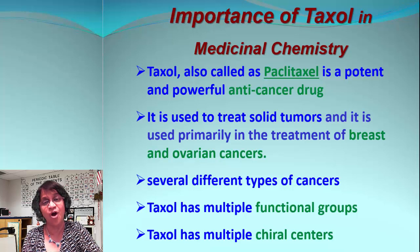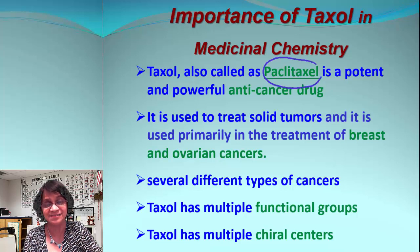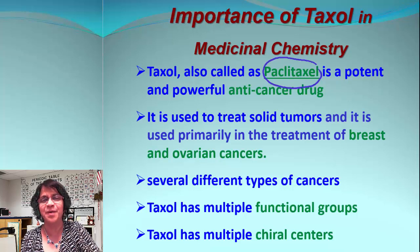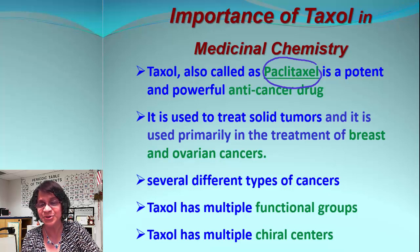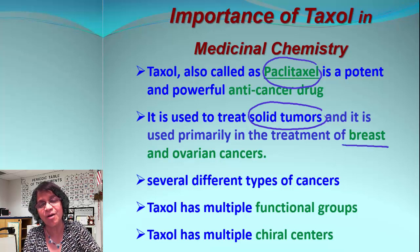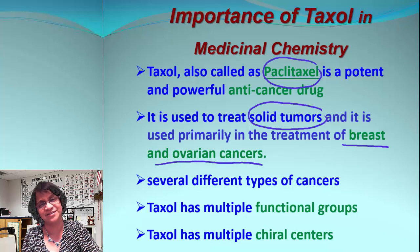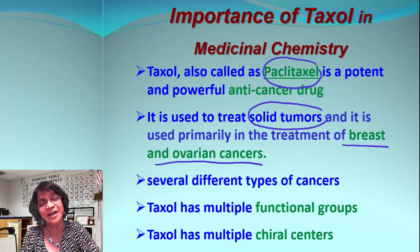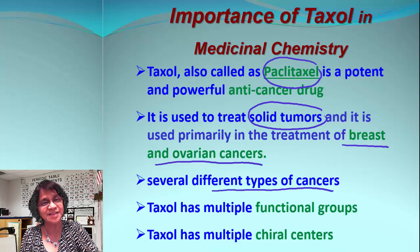Taxol, the common name is also Paclitaxel. It is a very potent and powerful anti-cancer drug. Mainly, it is used for treating some solid tumors, and it has also been proven useful in the treatment of specifically breast and ovarian cancer. There are ongoing attempts and trials to find out which other cancers it may be affecting, which makes Taxol a very important medicinal drug.